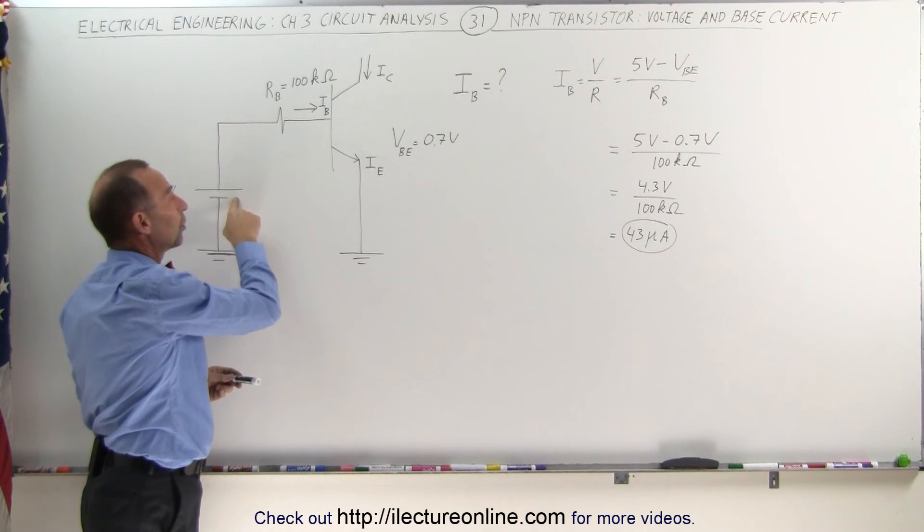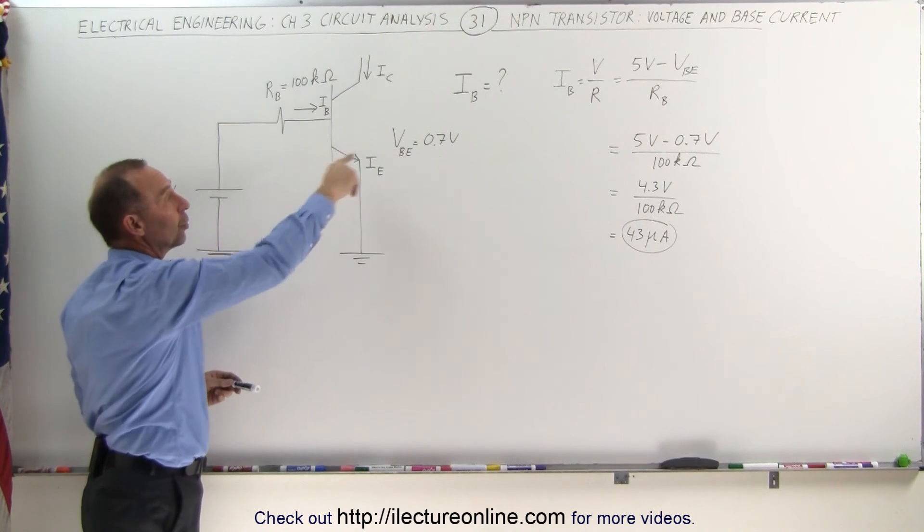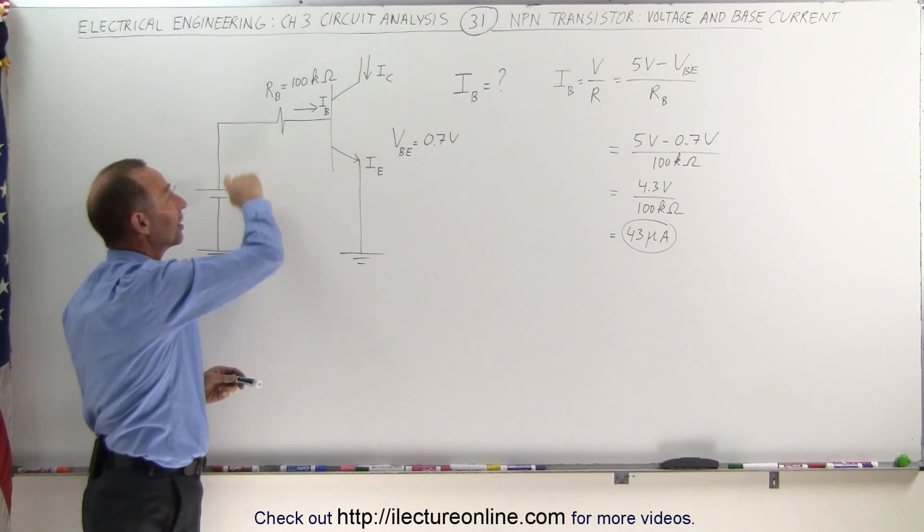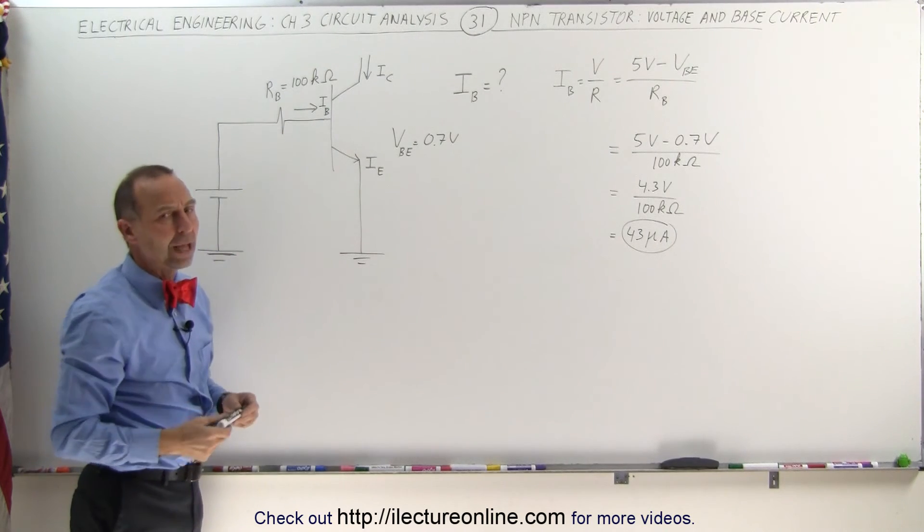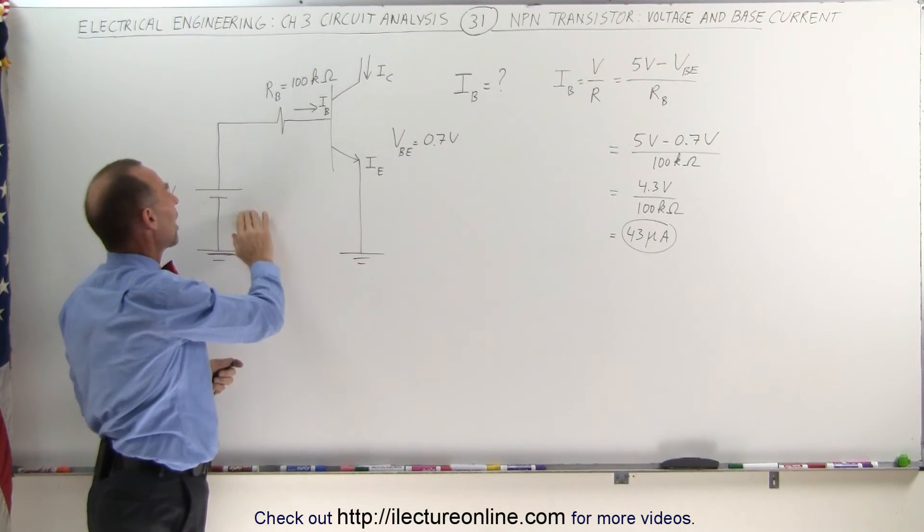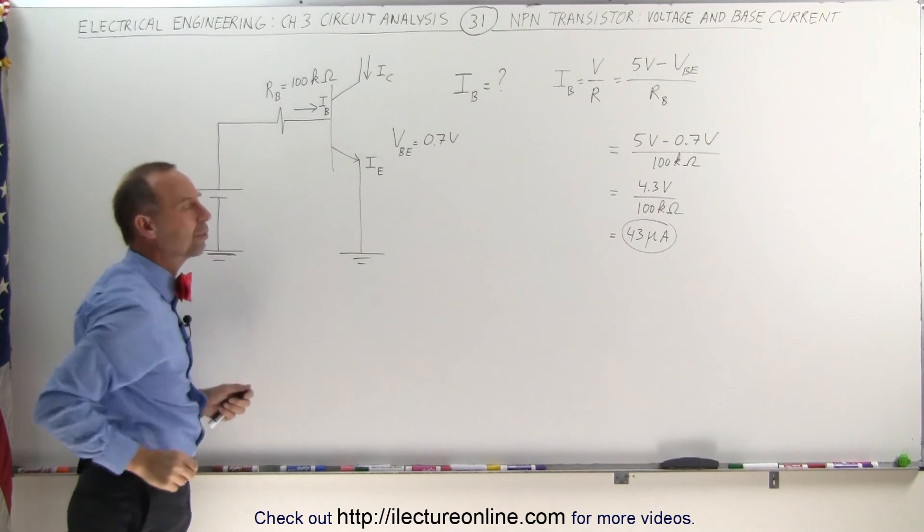Now notice that if this drops below 0.7 volts, there will no longer be any base current at all, because the net voltage around it will be equal to zero. So the base current will stop when this drops down to about 0.7 volts.